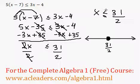Because x is smaller or equal to 31 over 2. And since it can also be equal to 31 over 2, that's part of the answer. So we fill in the dot.